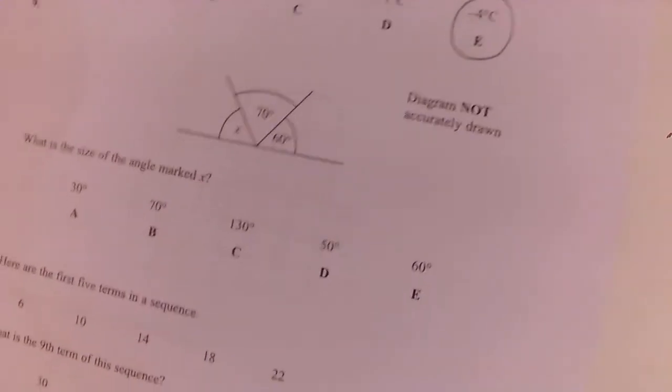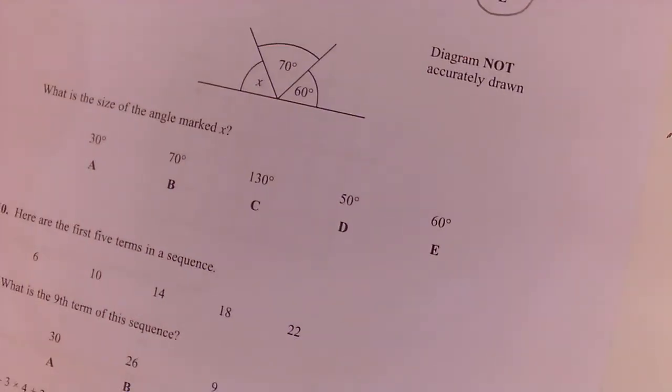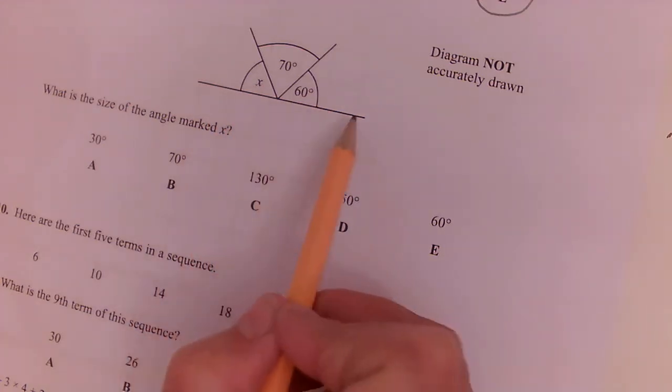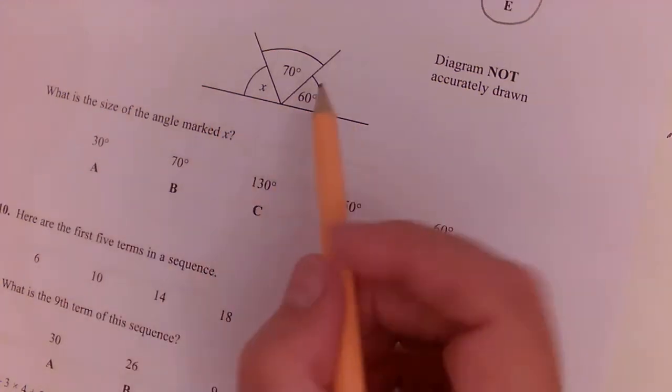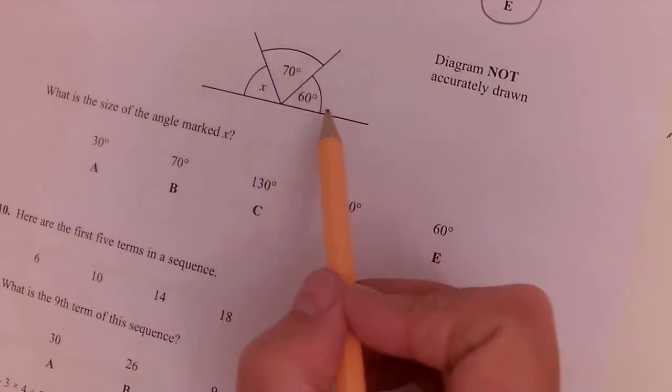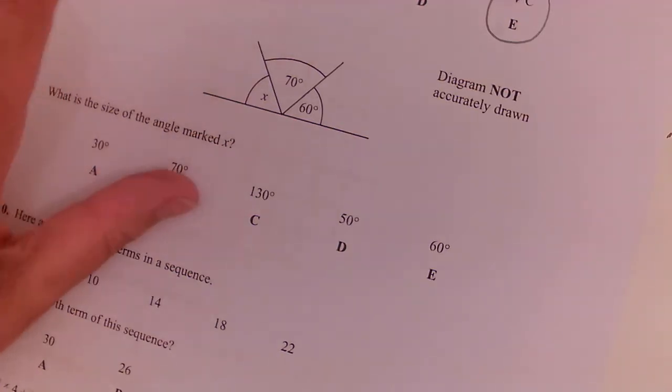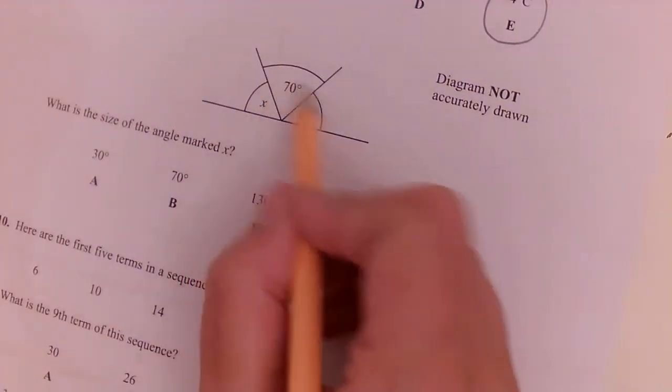Question nine. Work out the size of the angle marked X. Well, touching angles on a straight line add to 180. So this is 70 and 60. So 70, 80, 90, 100, 110, 120, 130. So together these are 130.